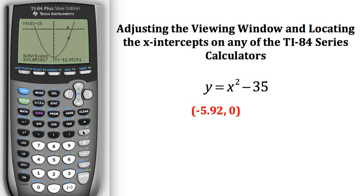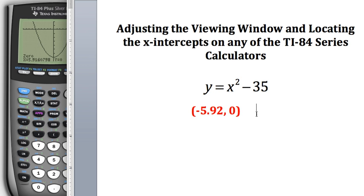Now it's asking for the right bound, so I'm going to arrow to the right side of it and hit enter. Now it's asking for the guess, so I can try to get my cursor right there on that x-intercept and hit enter. As we would have suspected it being symmetrical around the y-axis, it is at positive 5.916. So I can do 5.92 if I'm rounding to the nearest hundredths, zero, and write that as my second x-intercept.